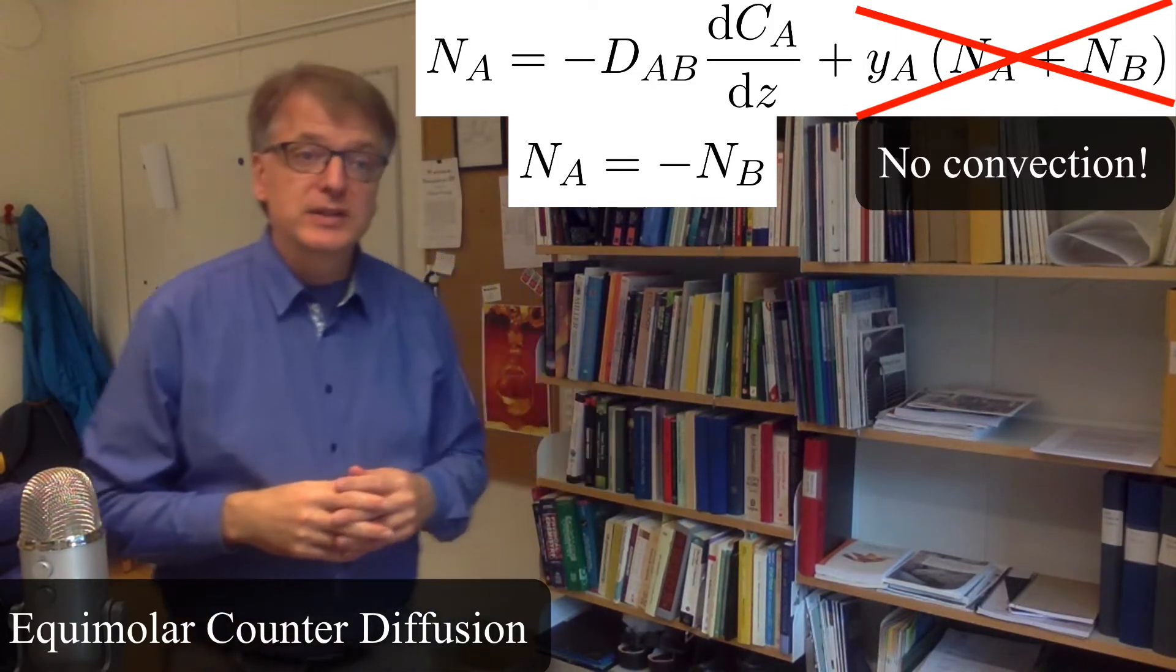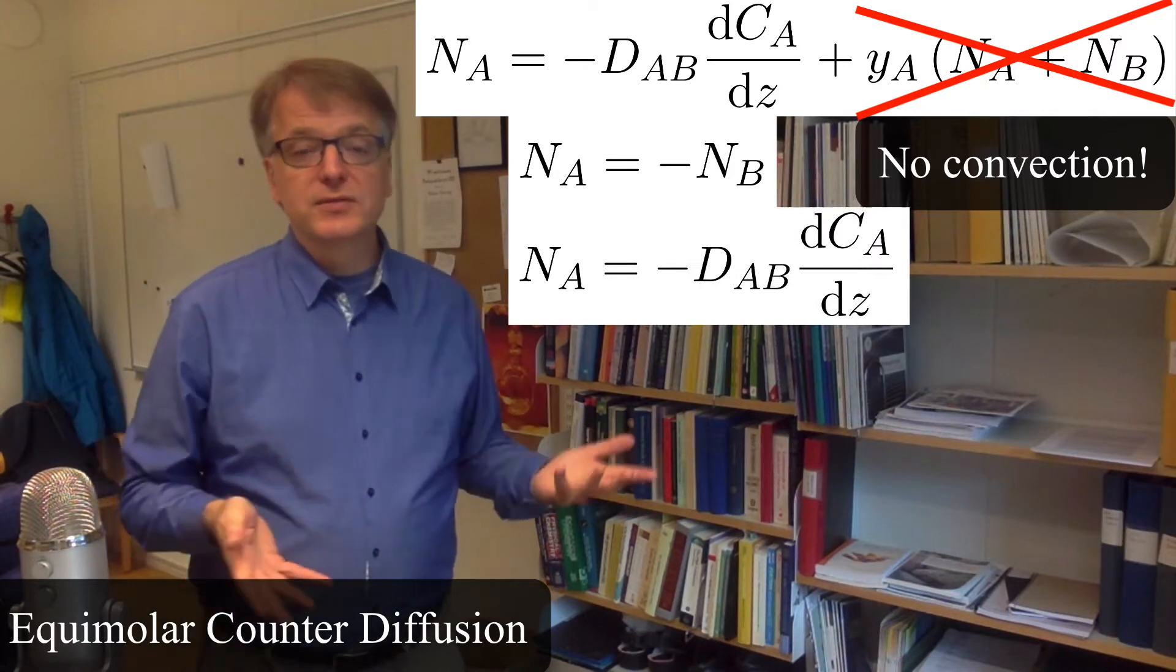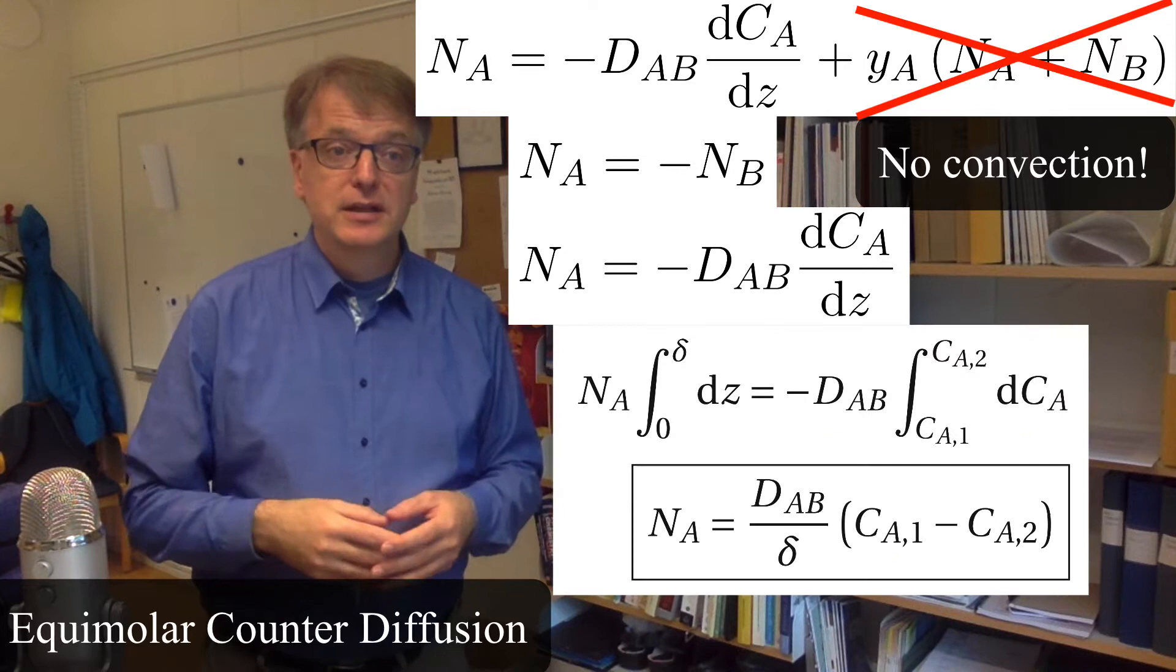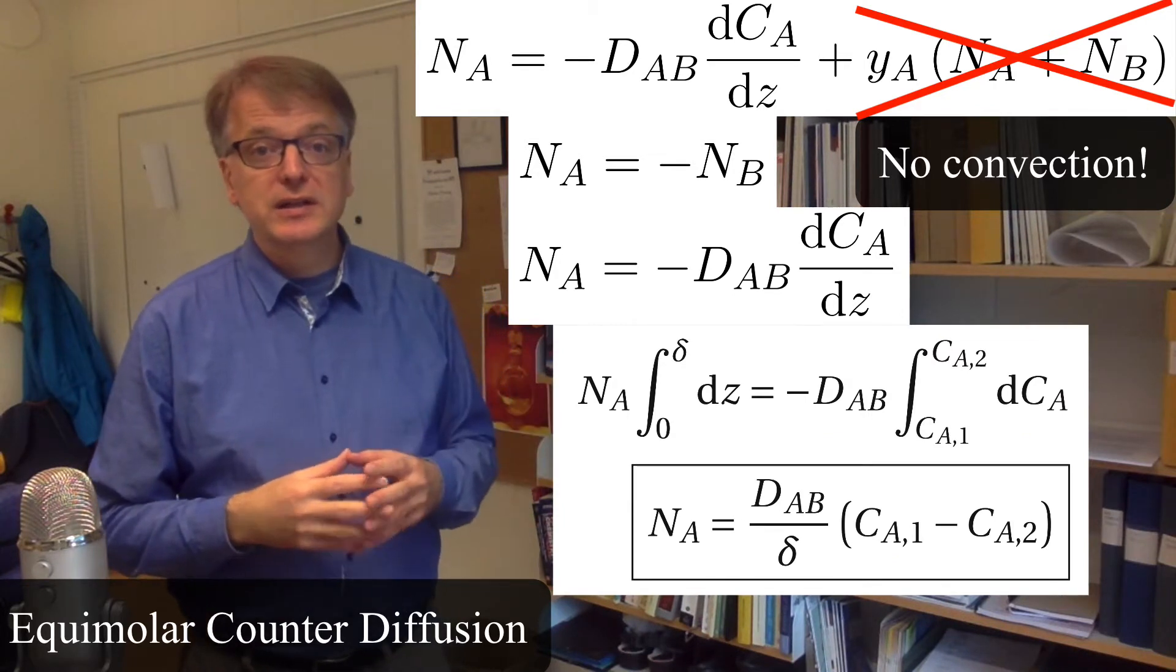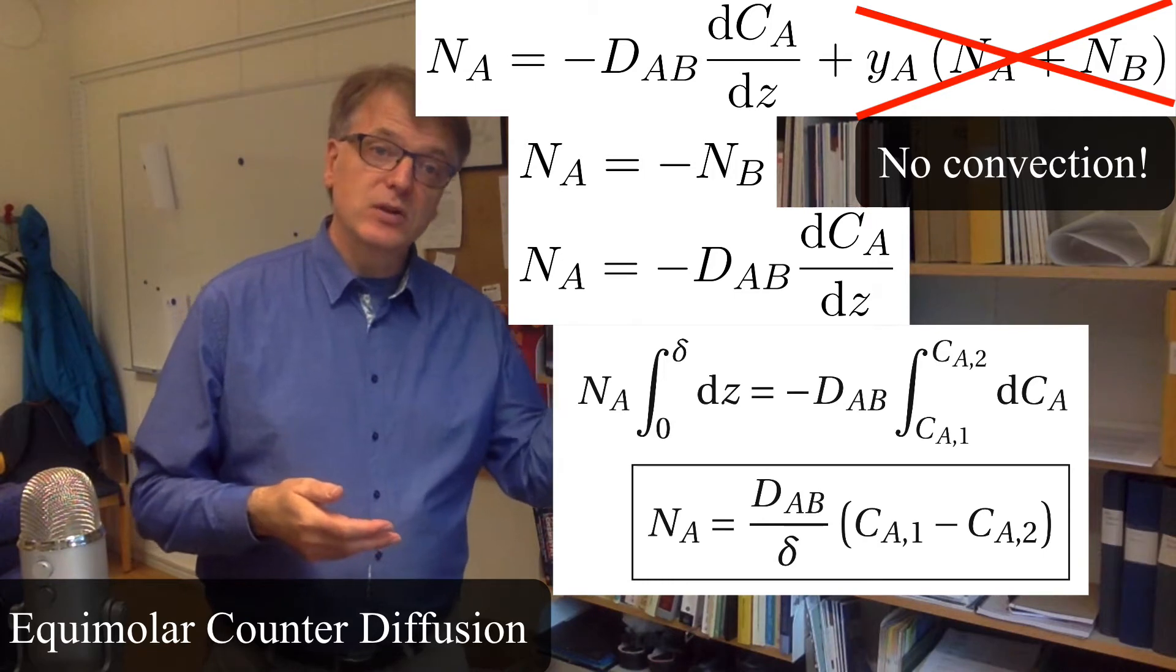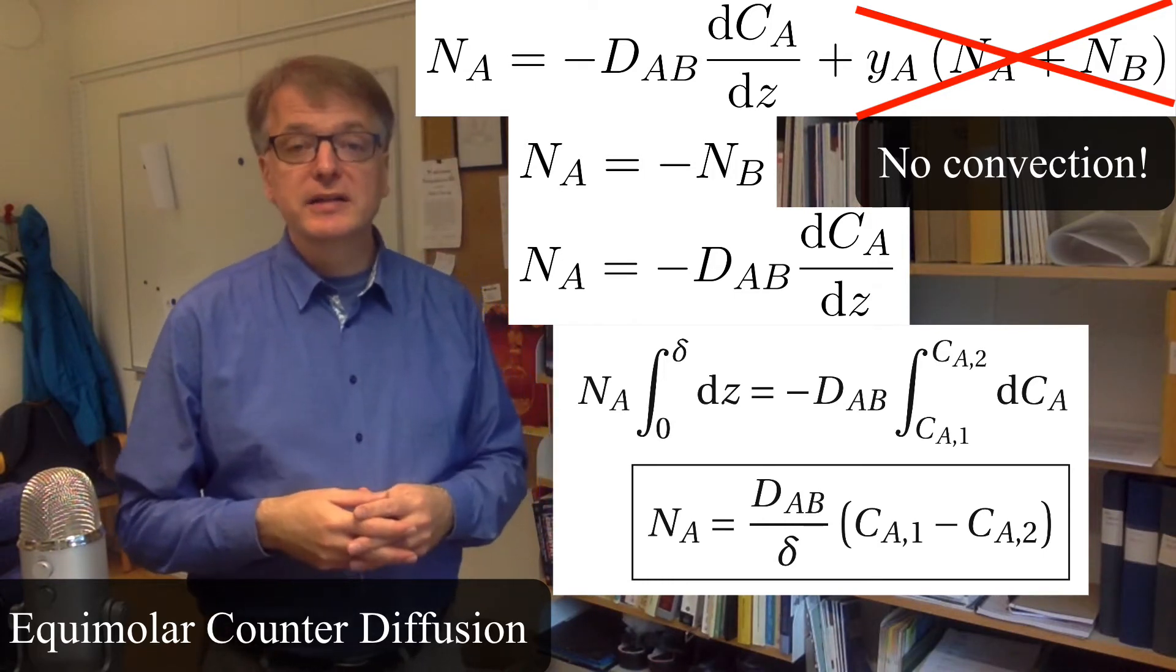You get this simple equation here: NA equals minus diffusivity times the concentration gradient. We can integrate that, and then you get this equation that NA equals the diffusivity times the difference in concentration divided by a distance.